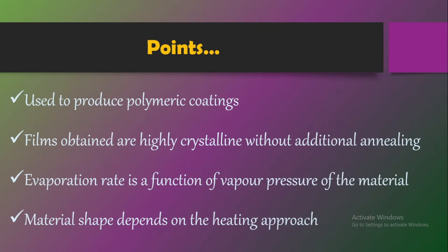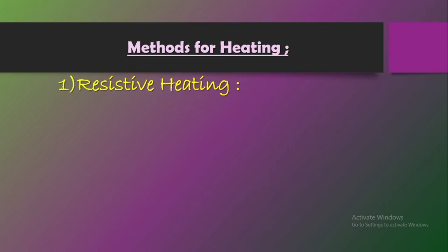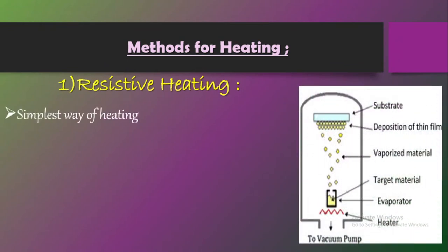Now let us understand the different approaches of heating the material for thin film deposition. There are mainly seven approaches for heating. The first one is the resistive heating process. The overall procedure remains the same; only the approach of heating differs. This is the simplest way of heating, mainly used in laboratory setups.